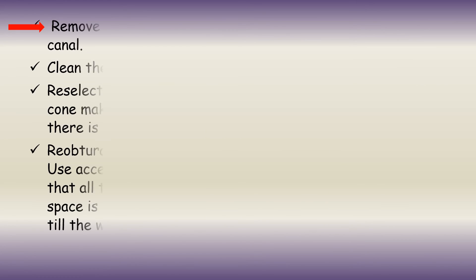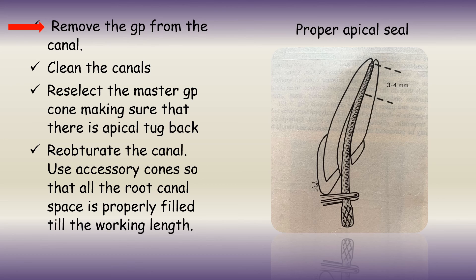To manage overfilled and underfilled cases, we remove the gutta percha from the canal, clean the canals, reselect the master gutta percha cone and make sure there is proper apical tuck back. When there is proper apical tuck back, there will be a proper apical seal. Finally, we re-obturate the canal, using accessory cones as well so that the entire root canal space is properly filled till the working length.